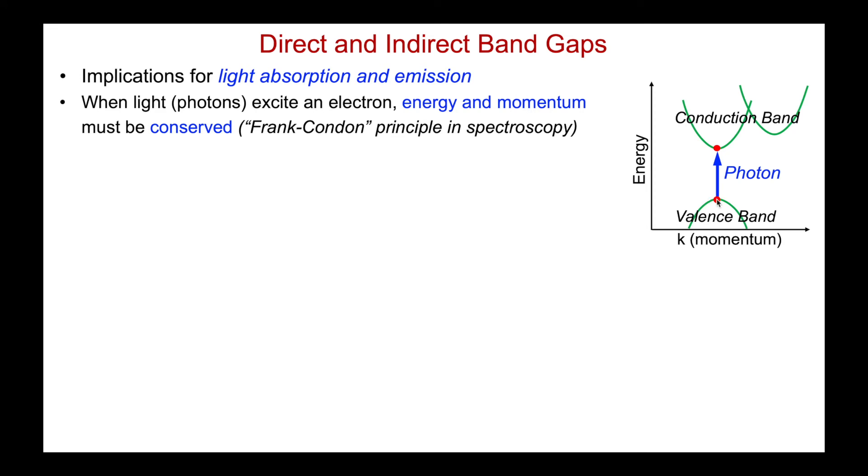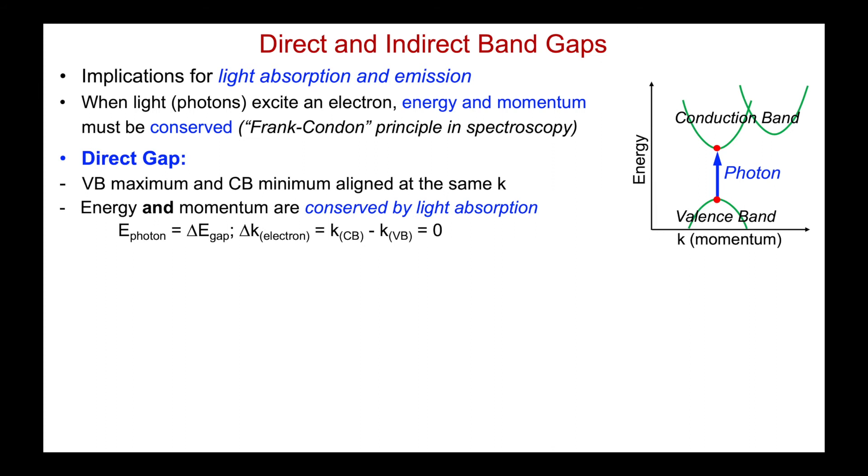Now let's look at a case where I have a direct band gap material. And I've drawn a schematic of the band diagram here on the right. The valence band maximum and the conduction band minimum are aligned at the same k vector. And therefore, when a photon excites an electron into the higher level, I conserve energy, but I also conserve momentum through the light absorption. So the energy of the photon is equal to the energy difference of the gap. And there is no change in the momentum of the electron because the difference of the momentum, the k vector in the valence band and conduction band, there isn't a difference. It's zero. And so this process, light absorption, and also the reverse, light emission, occurs with high efficiency.